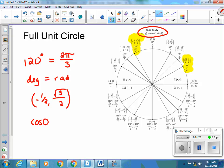So if I were to say, what is the cosine of 120 degrees, I would look at just the x value, and it would be negative 1 half. And that would be my cosine.